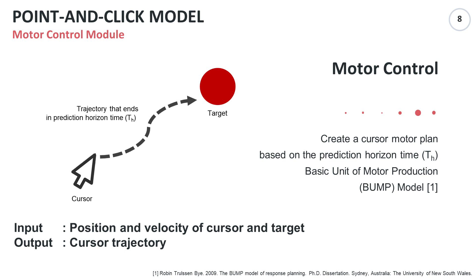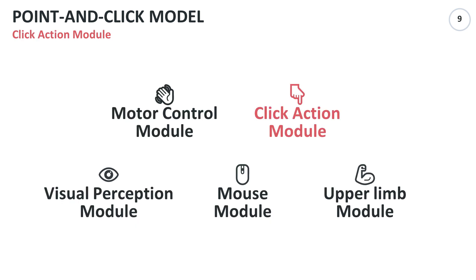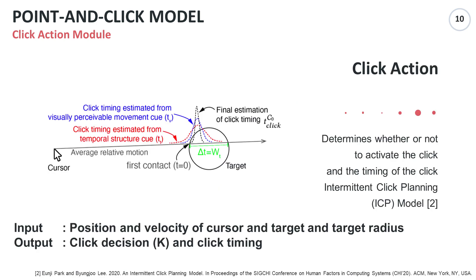The second module is the click action module. The click action module determines whether or not to activate the click and its timing. The optimal timing of the click action is calculated by integrating two sensory cues given during the execution of the current motor plan.